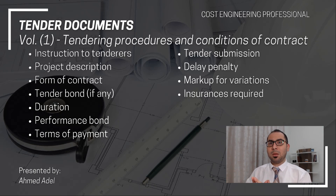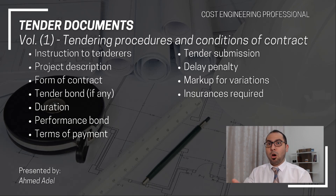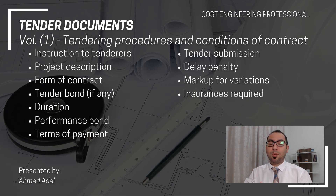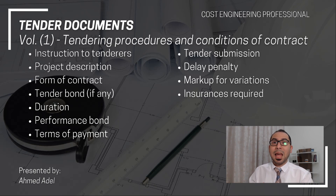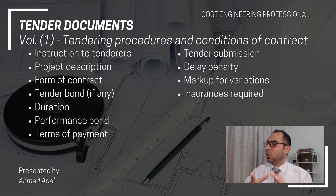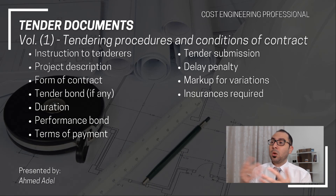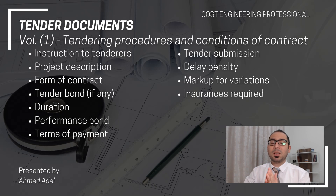Volume one also includes the tender bond, if any. Sometimes to guarantee the seriousness of your price, the client will ask you to submit some money or a bank guarantee before you submit your price, so that if your offer is selected you will be serious about executing the project. The details of the tender bond — whether it should be a bank guarantee, cash, or check — are all found in volume one. Additionally, project duration, performance bonds, terms of payment, how the tender submission should be, delay penalties, markups for variations, and insurances are all found in tendering procedures and conditions of contract.